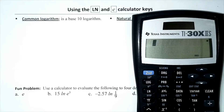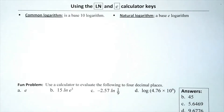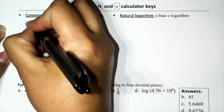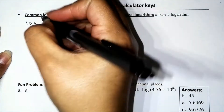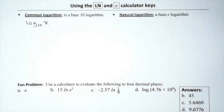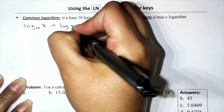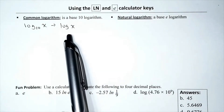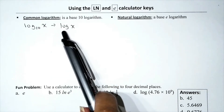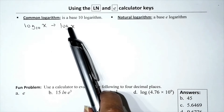Hi guys, welcome back. Today we're going to quickly review the common logarithm and the natural logarithm, but we'll primarily focus on how to use the ln key and the e key. The common logarithm is the name given to a logarithm with a base of 10. We typically write it as log of x — when the base is not shown, it's implied to be 10.